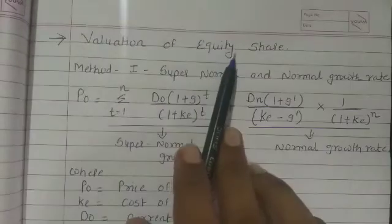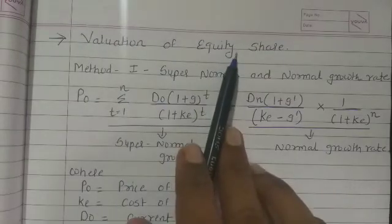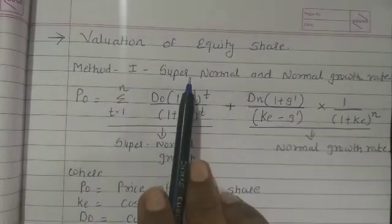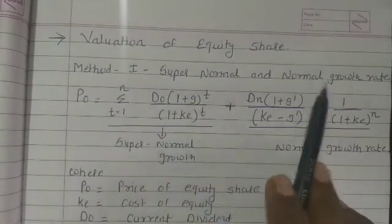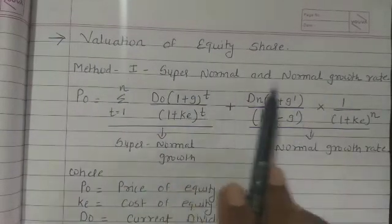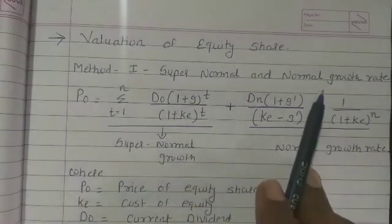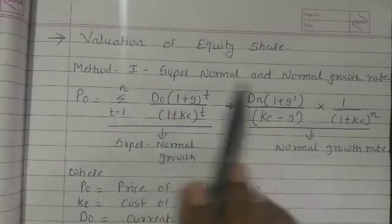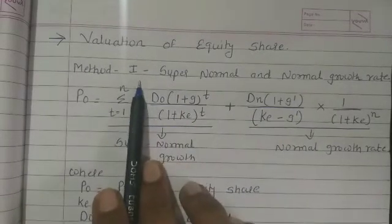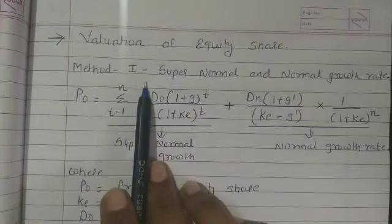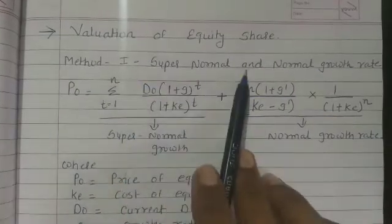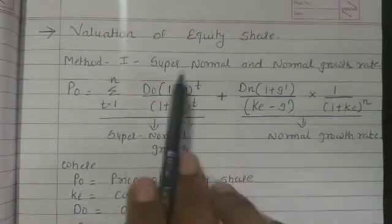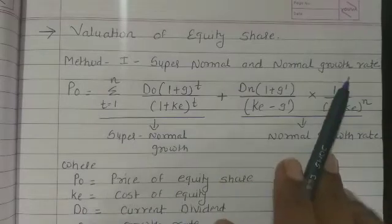In valuation of equity share, there are mainly three models or three methods used: super normal and normal growth rate, equity capitalization rate, and earning capitalization rate. So first method we will explain is the super normal and normal growth rate.